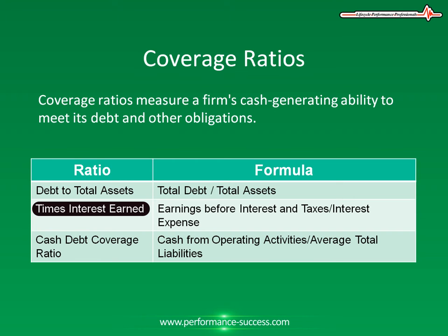Failing to meet these obligations could force a company into bankruptcy. Ensuring interest payments to debt holders and preventing bankruptcy depends mainly on a company's ability to sustain earnings. However, a high ratio can indicate that a company has an undesirable lack of debt or is paying down too much debt with earnings that could be used for other projects. The rationale is that a company would yield greater returns by investing its earnings into other projects and borrowing at a lower cost of capital. This ratio is also referred to as interest coverage ratio and fixed charge coverage.